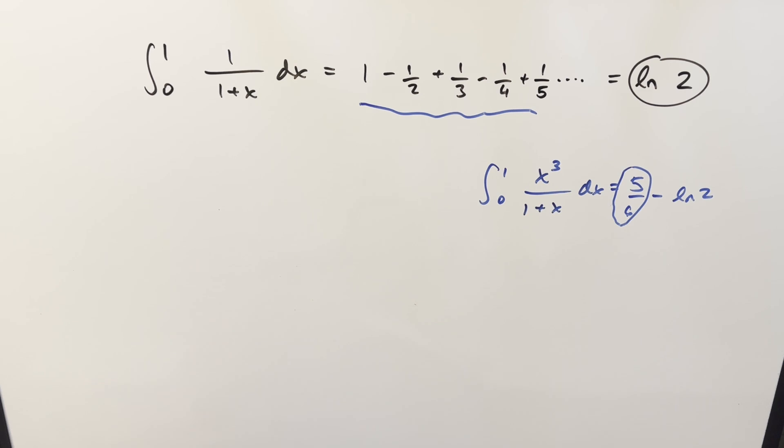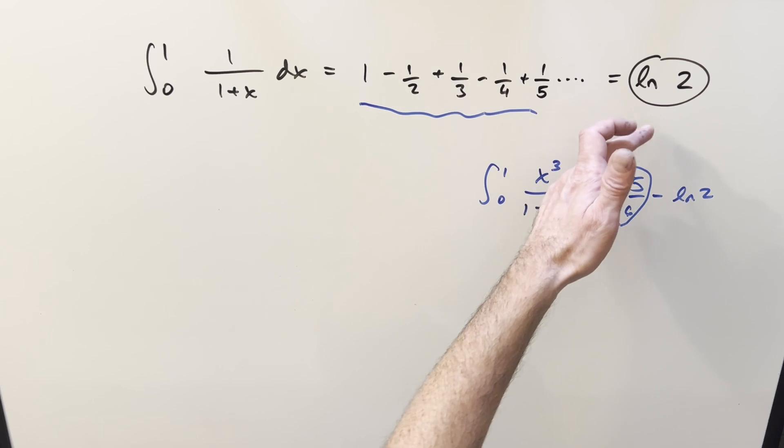And what this 5/6 represents is terms stripped out of the alternating harmonic series. And there was something in the comments from David Kravitz. I'm not sure if this is exactly what he meant, but the idea is that with this integral, we could show the value of the alternating harmonic series is natural log of 2.